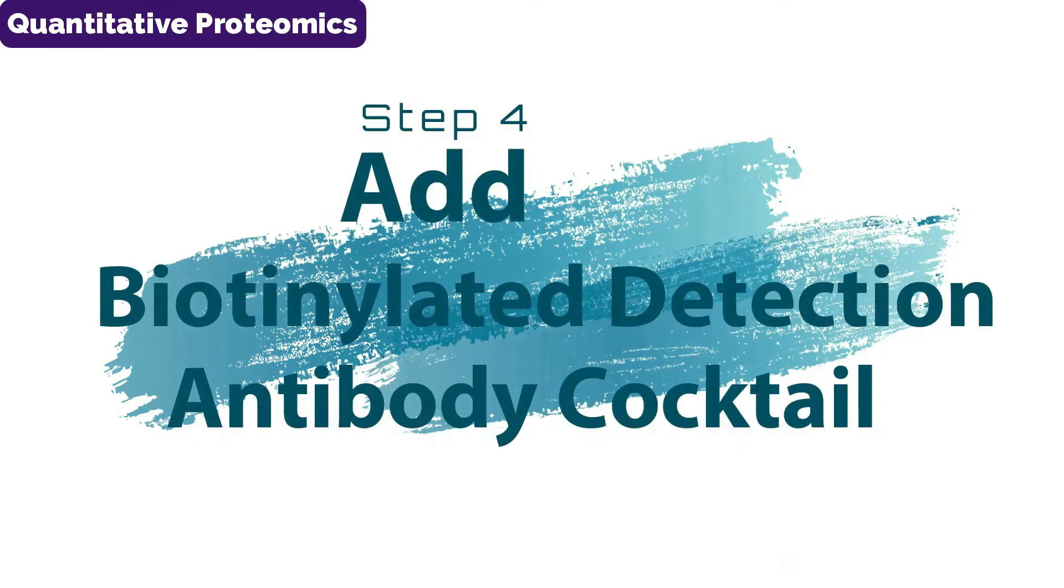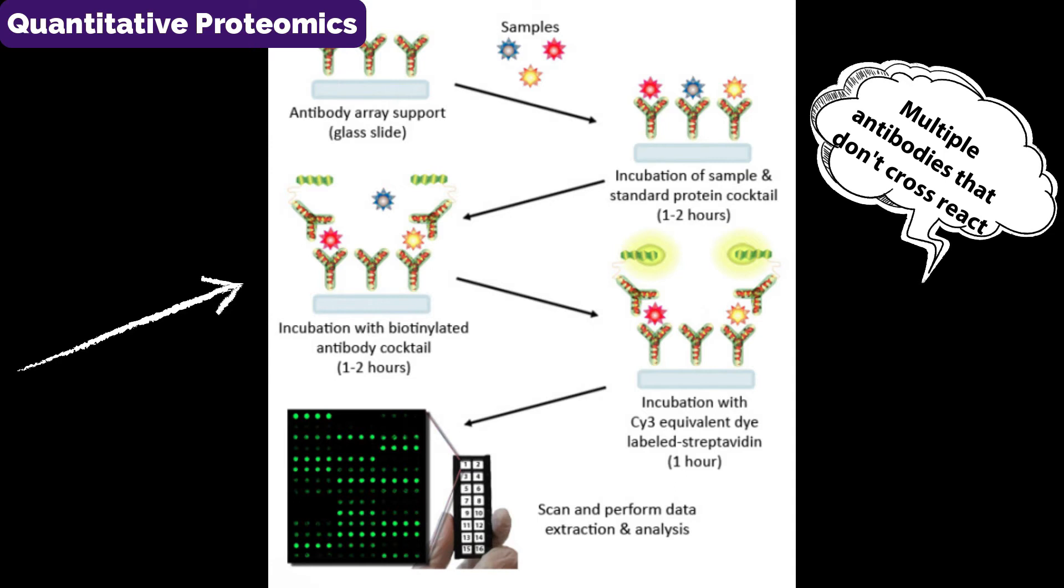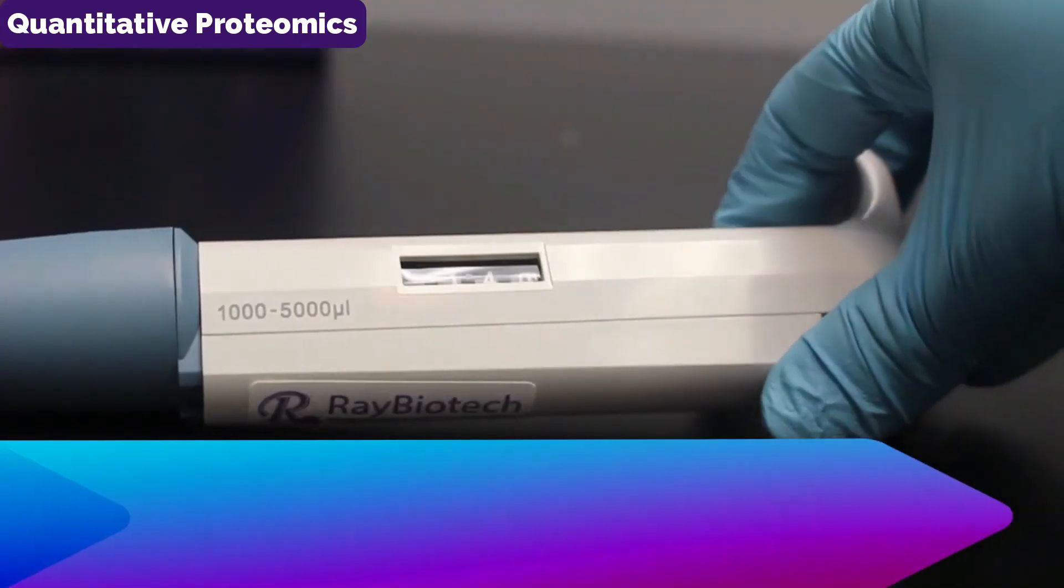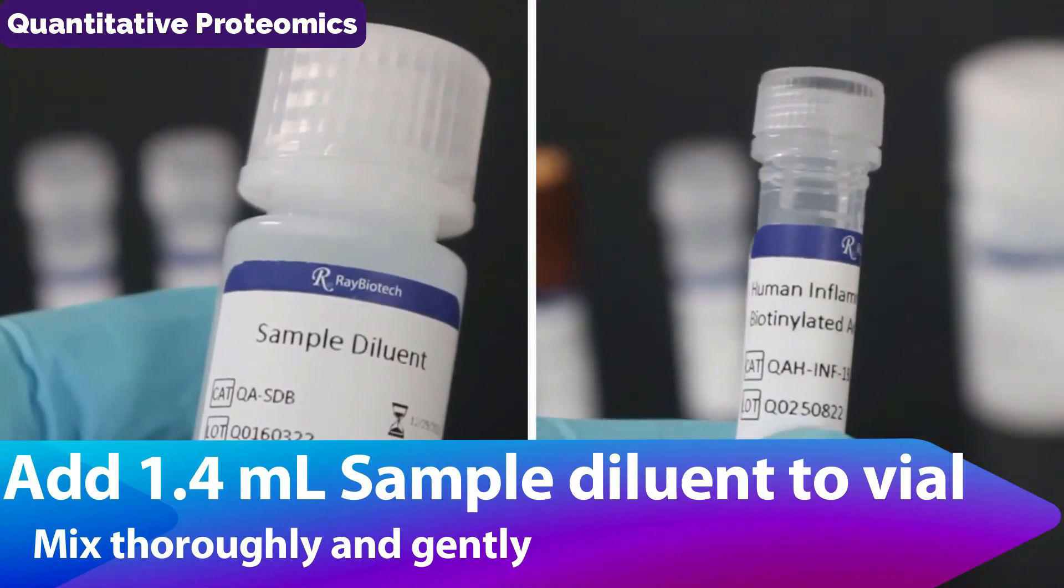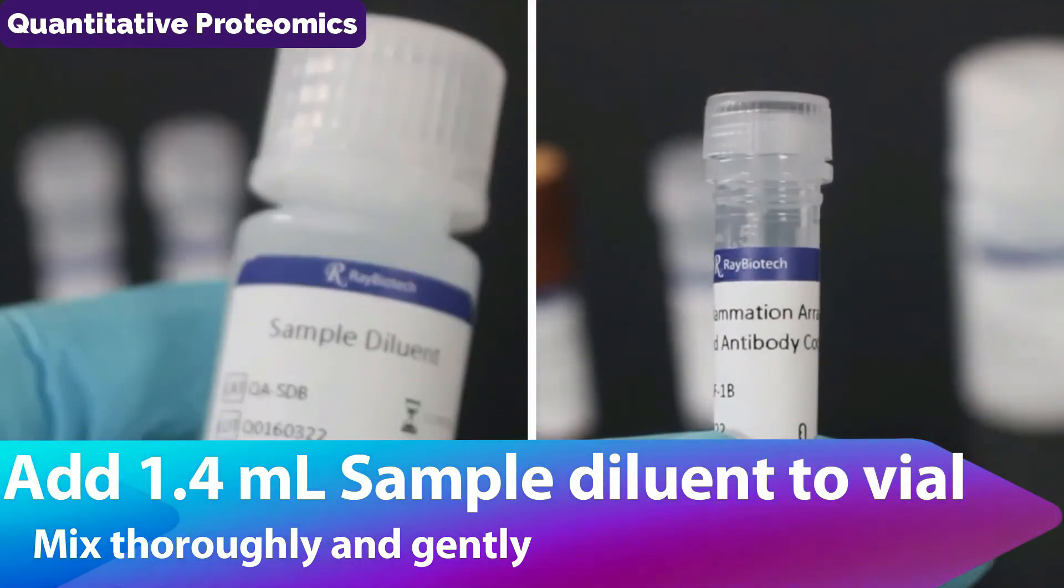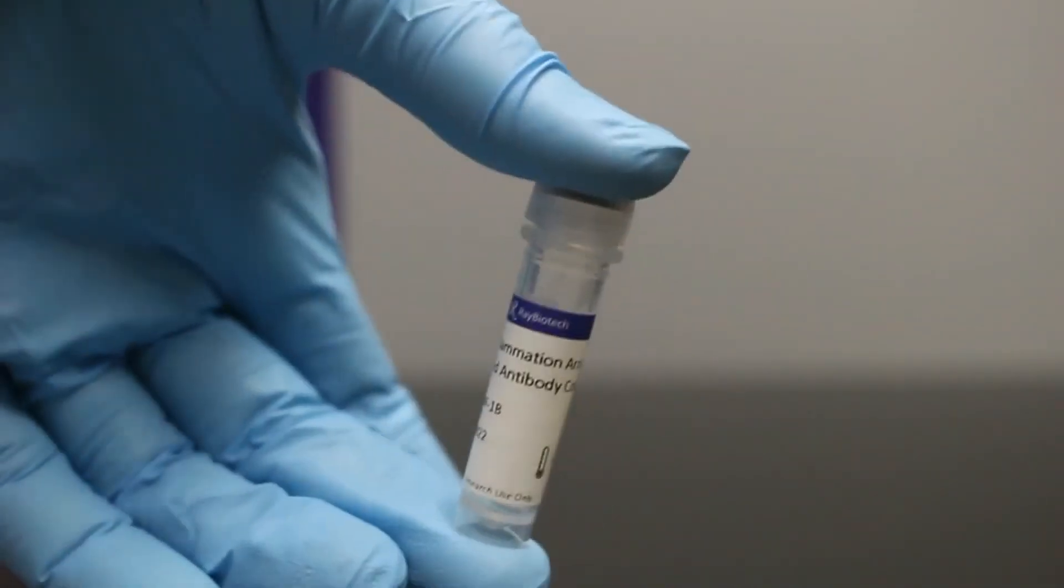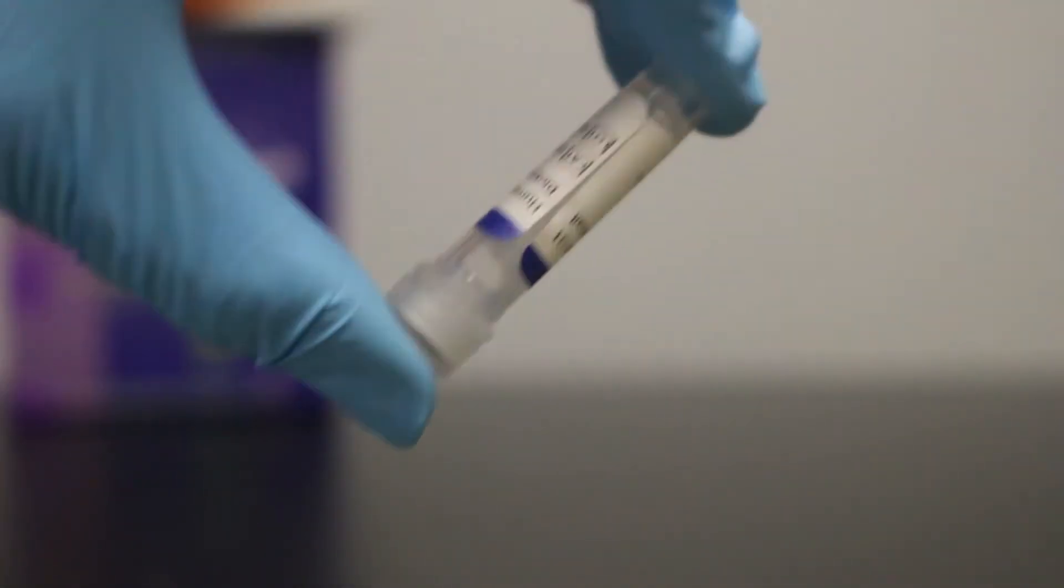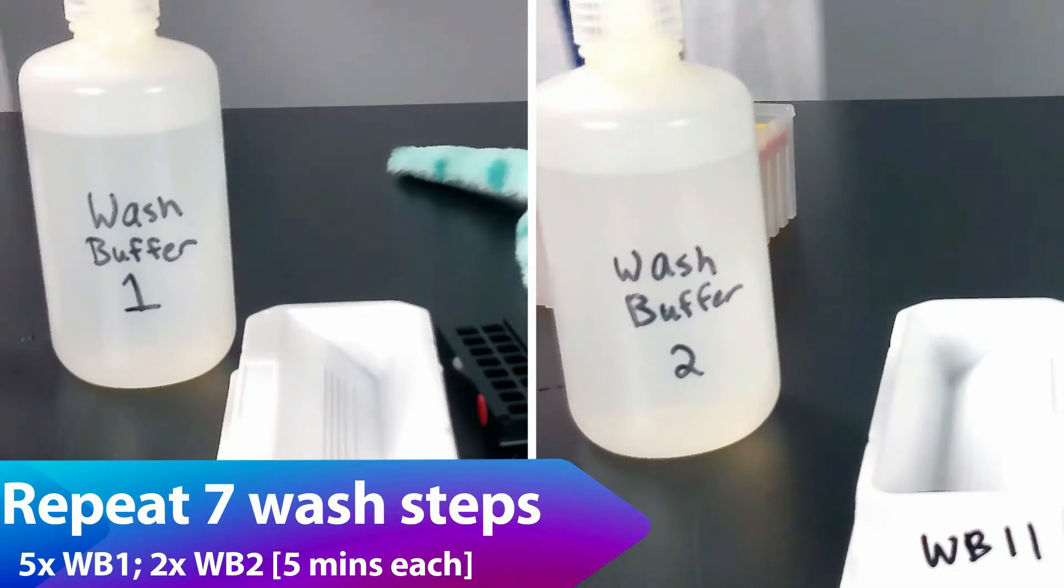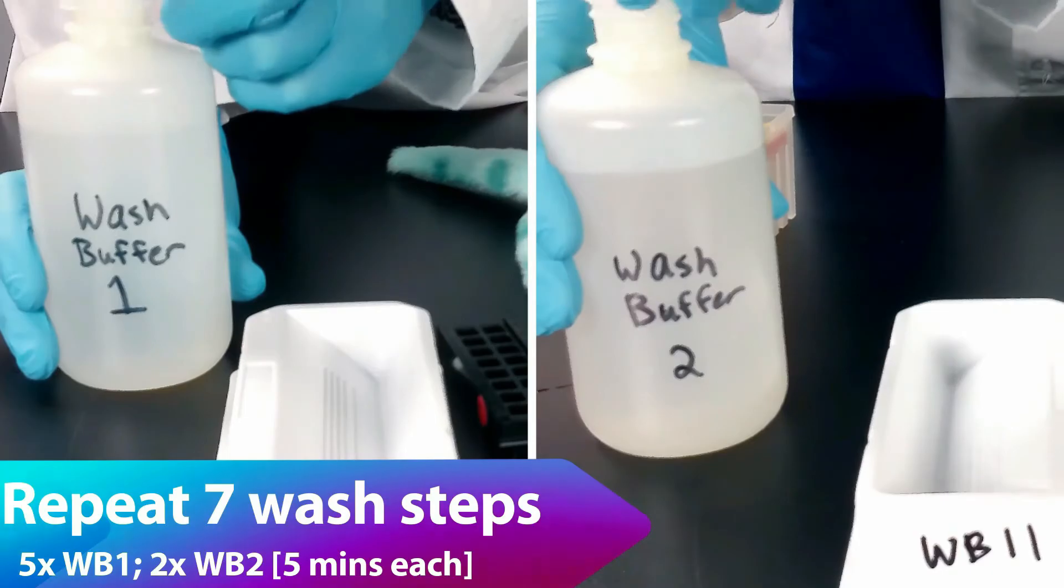Now that the antigens have been captured, we need to detect them using a biotinylated detection antibody. Remember, there are multiple detection antibodies in the cocktail, each formulated to minimize cross-reactivity. First, reconstitute the vial by adding 1.4 milliliters of sample diluent and mix thoroughly and gently by repeated inversions or repeated pipetting. Repeat the same wash buffer steps with wash buffer 1 and wash buffer 2 as you did between the previous incubation.